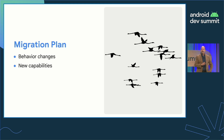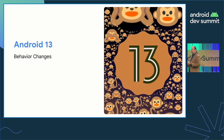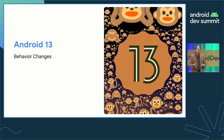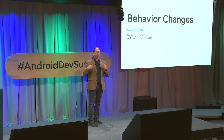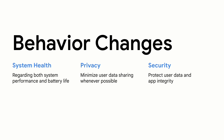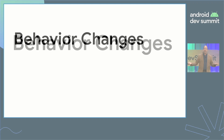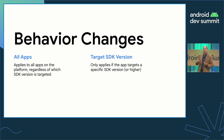When migrating to a new Android release, I look for behavior changes and new features that I could potentially utilize to differentiate my app. A behavior change is a big deal, because it means that an app that worked fine on earlier releases of Android may not work exactly as expected on the new release. We try to limit these kinds of changes to things that impact system health — battery life, system performance, user privacy, and the security of the OS and your app. Some changes apply to all apps, and some only apply once your target SDK version targets Android 13's API level 33.